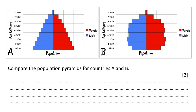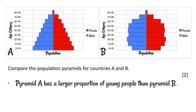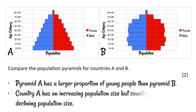In an exam, you may be asked to compare or contrast population pyramids. For example, this question asks you to compare the population pyramids for countries A and B. We could say that pyramid A has a larger proportion of young people than pyramid B, and that country A has an increasing population size while country B has a declining population size.